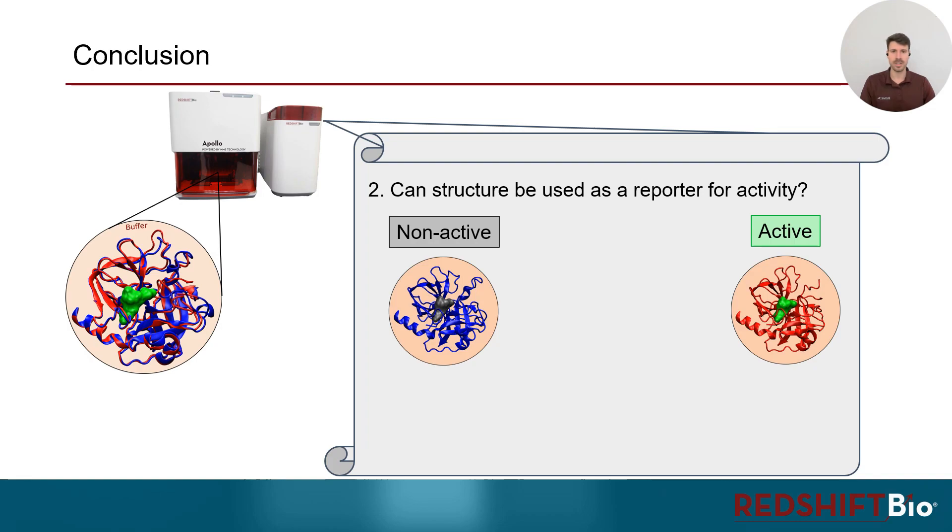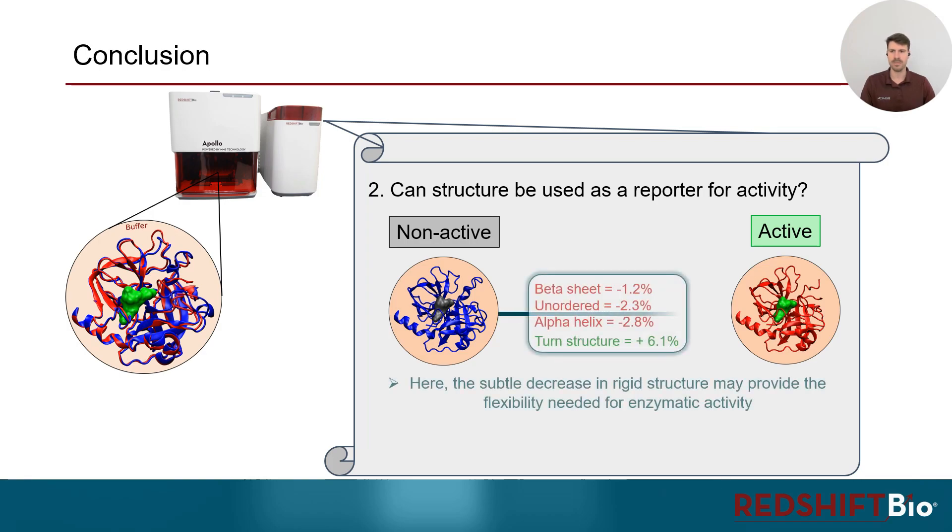And it does make a lot of sense. Remember, the catalytic triad was well separated on the protein sequence, but primarily the higher order structure determines which residues are close in space and how they interact. Here, for example, we saw a slight decrease in rigid structure along activation, which may provide the flexibility needed for the enzyme to work.